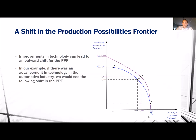Our maximum amount that we can produce of computers stays the same. However, Alpha 1 for automobiles produced moves to Alpha 3. So now, if we only produce automobiles, we can produce 2,000, whereas before the innovation in technology, we could only produce 1,500.